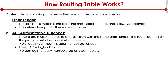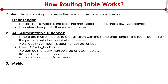Administrative distance can be manually manipulated. For example, here's a sample config: if you're on a router, you can type in 'router ospf 1', and then under the router OSPF configuration, you can change the distance to 70. That would change the administrative distance of the OSPF routing protocol on that router.